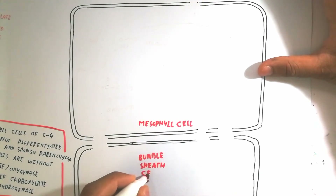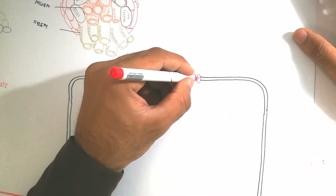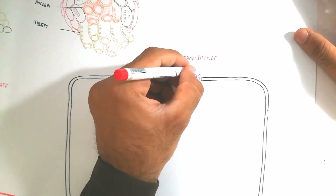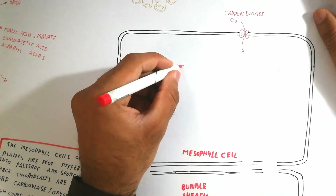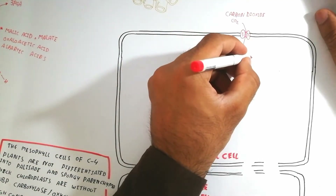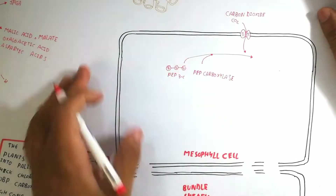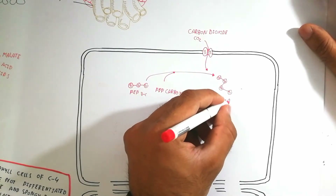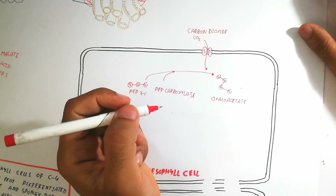Here I have drawn the mesophyll cell and bundle sheath arrangement. Carbon dioxide enters the mesophyll cell, where phosphoenolpyruvate (PEP) is present in high concentration. Carbon dioxide fixation occurs via the enzyme PEP carboxylase (phosphoenolpyruvate carboxylase), which converts CO2 and PEP into oxaloacetate. Oxaloacetate contains four carbons — that is why it is known as a C4 plant.